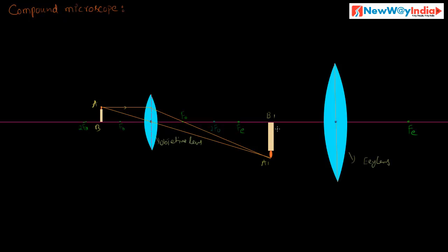This real inverted image becomes the object for the eye lens. If you adjust the eye lens, this real image is placed between the optical center O and the principal focus Fe of the eye lens.